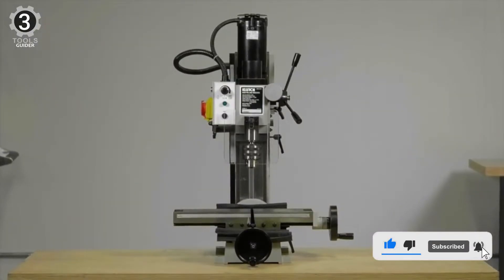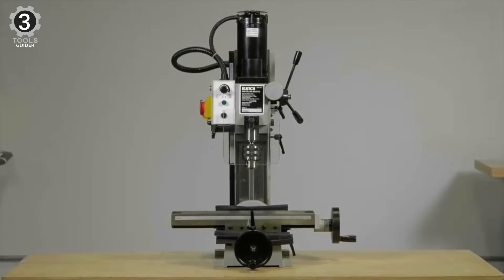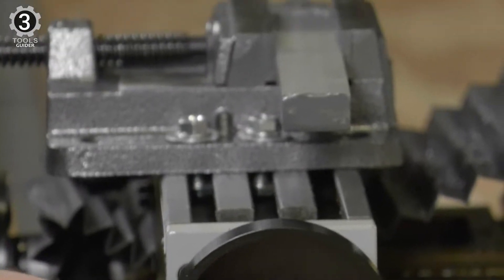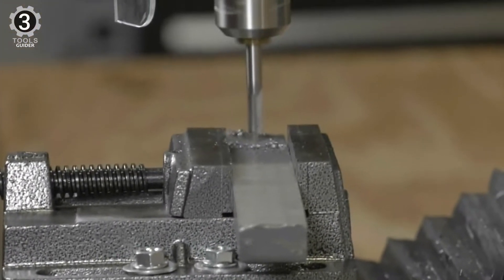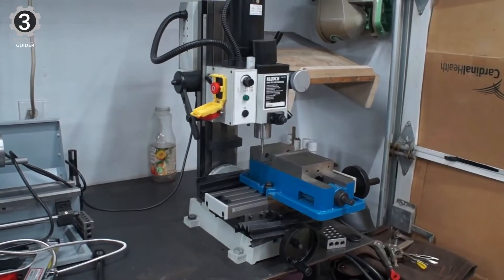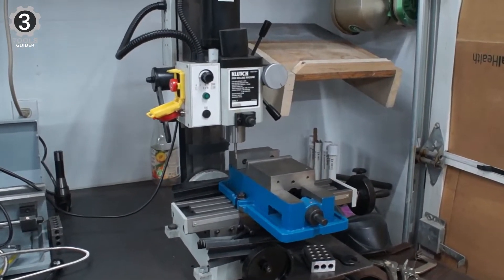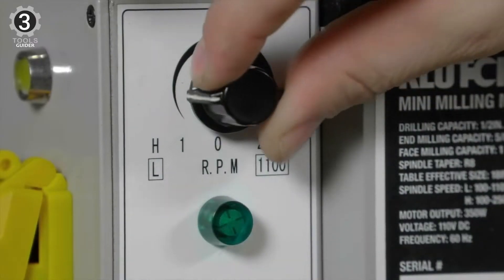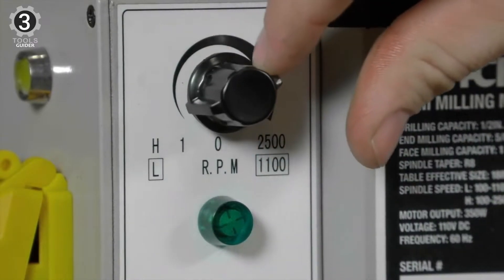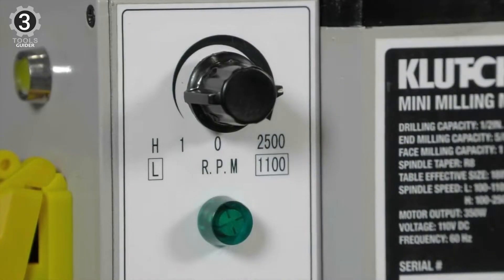One added benefit is that you can find many upgrades for this milling machine. This is very helpful as you'd get used to how it works and would like to increase its capabilities. The clutch mini machine has good quality and some great features. The variable speed motor can reach up to 350 watts of power, and the speed is available from 100 RPM to 2500 RPM.